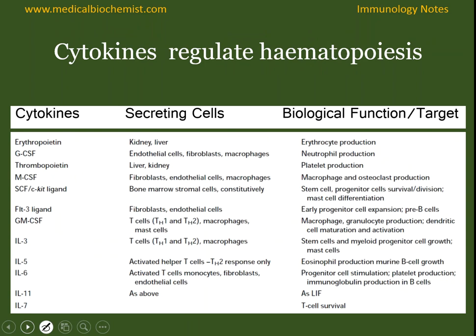The cytokines that regulate hematopoiesis include erythropoietin, G-CSF, thrombopoietin, SCF, C-kit, and GM-CSF. All these have specific functions in specific types of tissues.